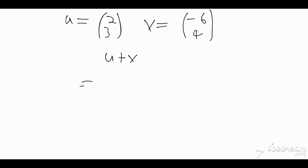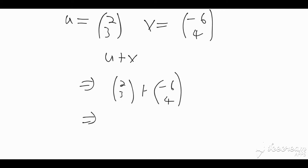So algebraically, u plus v implies (2, 3) plus (-6, 4). As we saw from the graph, what really happens is that we add the corresponding components. So 2 plus -6 gives -4, and 3 plus 4 gives 7. That would be my answer when combining u plus v with addition.